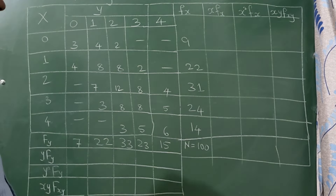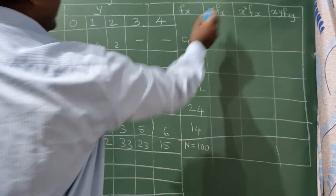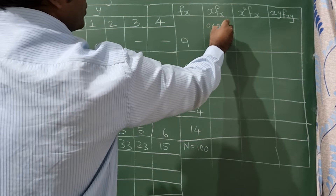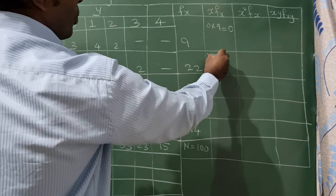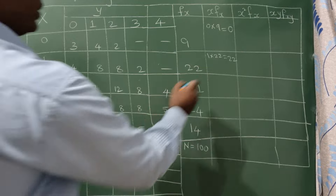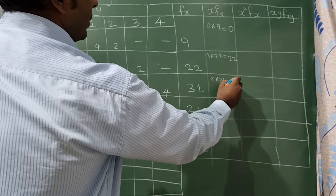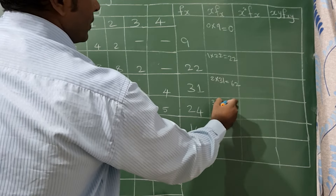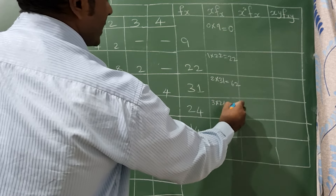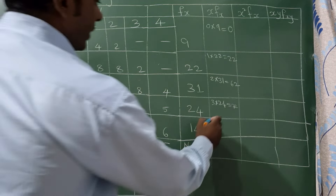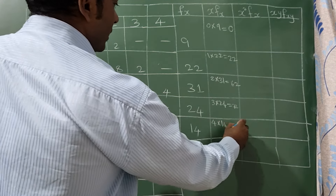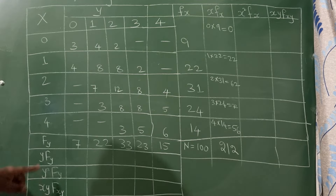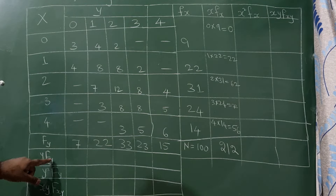Now computing x·fx: x is 0, 1, 2, 3, 4 and fx are the row totals. So 0×9 = 0, 1×22 = 22, 2×31 = 62, 3×24 = 72, and 4×14 = 56. Adding all these gives the summation of x·fx = 212.